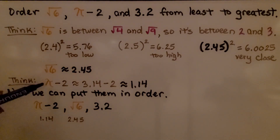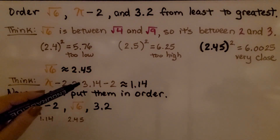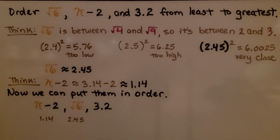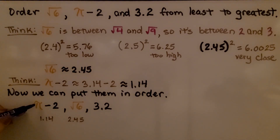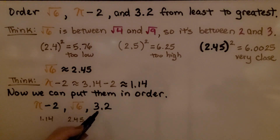Pi minus 2 is approximately 3.14 minus 2, which gives us 1.14. Now we can put them in order: 1.14 is the least, so that would be pi minus 2; approximately 2.45 for the square root of 6 comes in the middle; and then 3 and 2 tenths is the greatest.